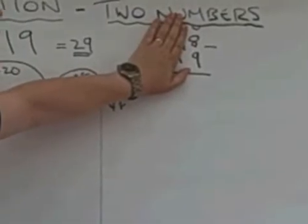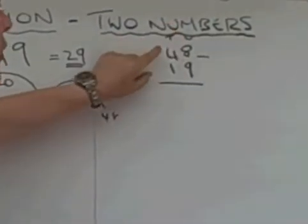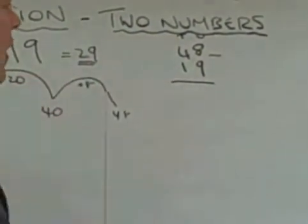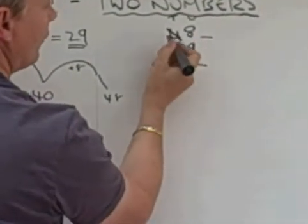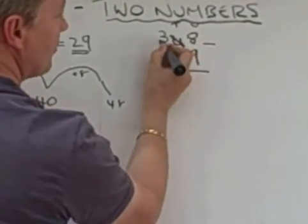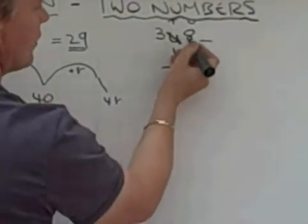So in order to do that, I'm going to borrow from the tens column. I'm going to transfer one of those tens, which now becomes 3, over to this side, and there it is.